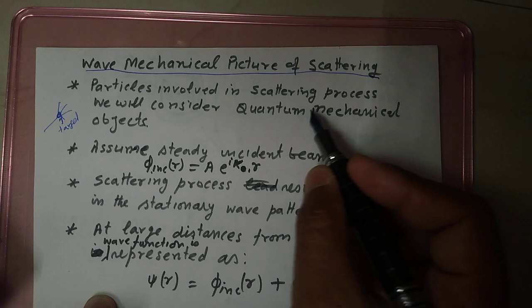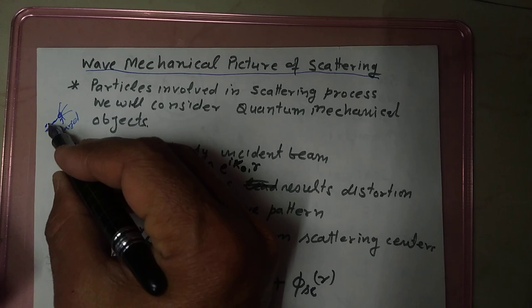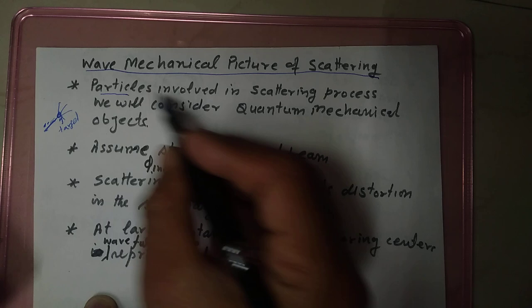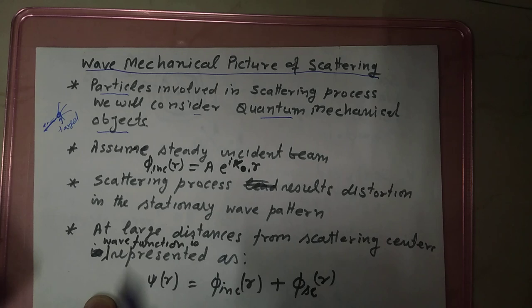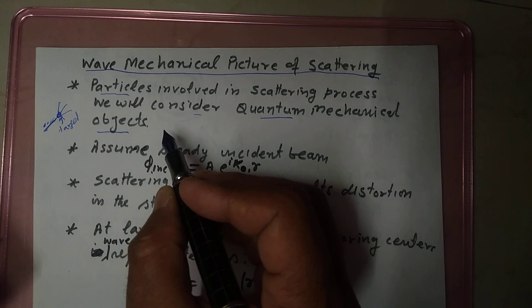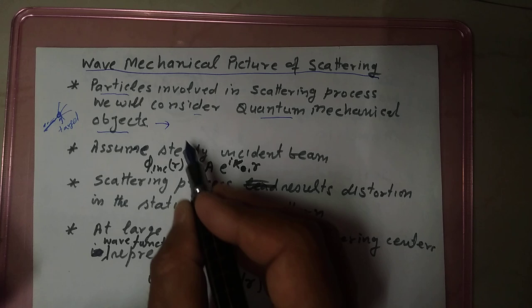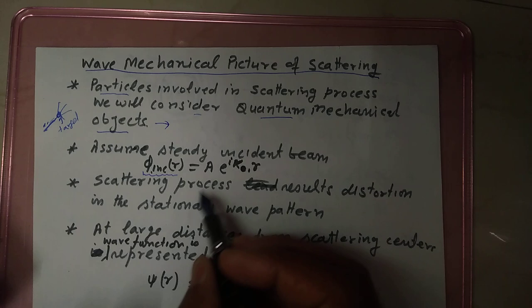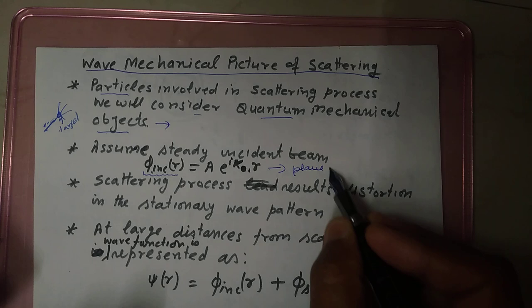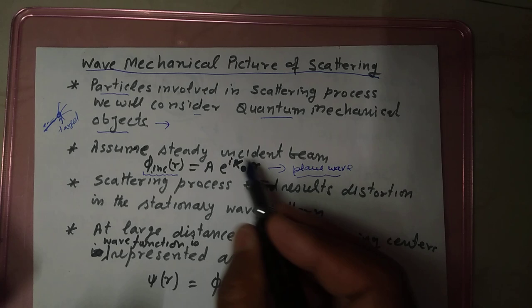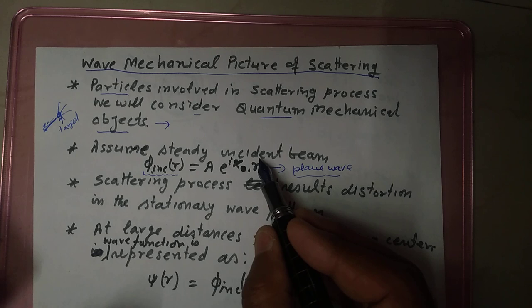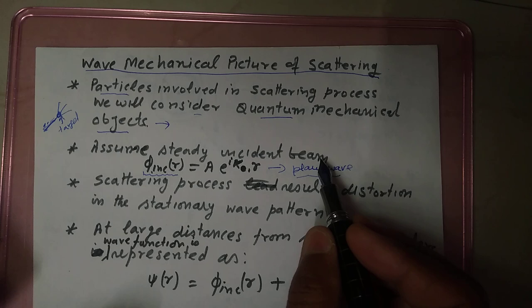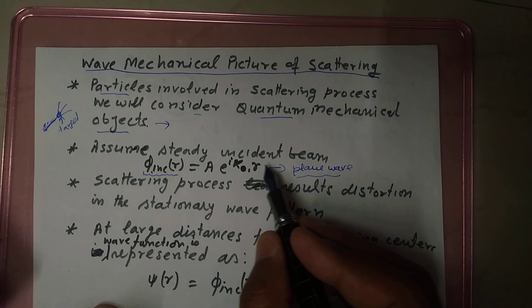In this case of scattering processes, in this beam of particles which we are bombarding on the target, each particle we will consider as a quantum mechanical object. If we are considering a quantum mechanical object, we have to describe each incident particle with the help of a wave function, or by describing it with the help of a plane wave. We will also consider that this beam is a steady incident beam — time independent. The beam is time independent; their number remains the same.